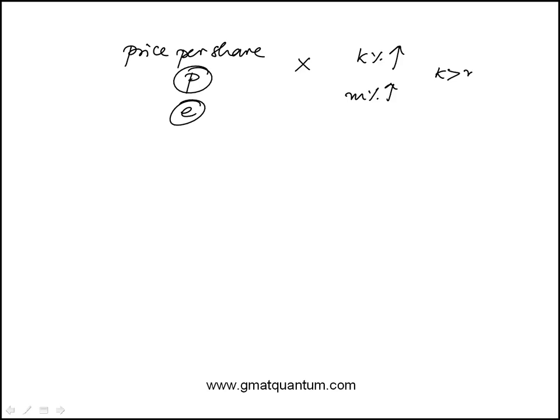And we're told that K is greater than M. And the question is, by what percent did the ratio price per share to earnings increase? So initially, it's P over E. And now after the increase,